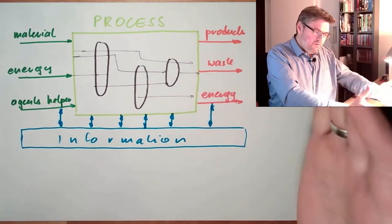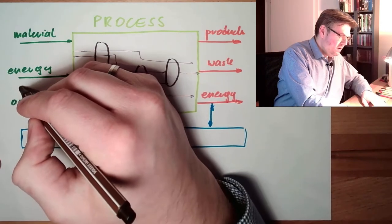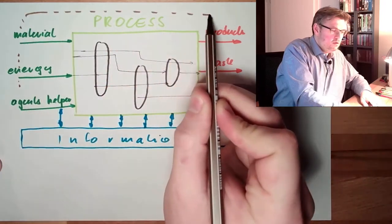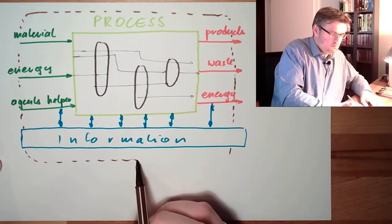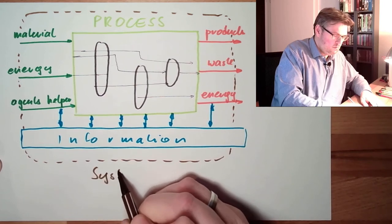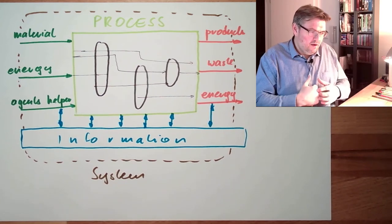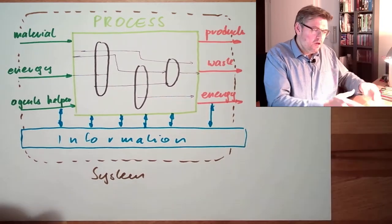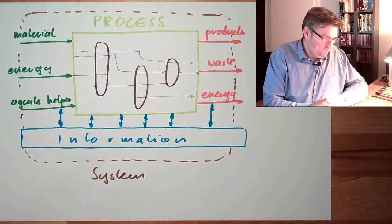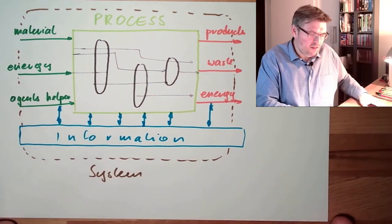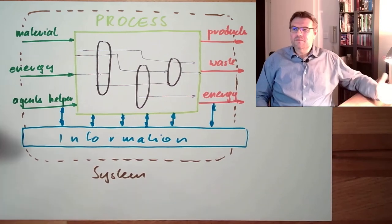And all those stuff together, the whole bunch of it, this is running in a system. A system, in a technical matter, is a precisely defined area in which the process takes place. There might be interfaces. However, it's defined. That's a system. It's more a lot of words. I know. However, these are the words we are using.